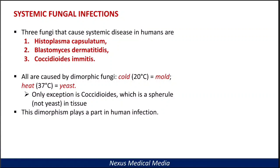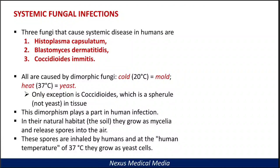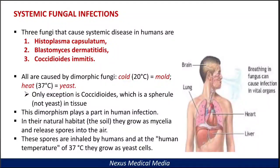This dimorphism plays a part in human infection. Their natural habitat is the soil, where they grow as mycelia and are released as spores into the air. These spores are inhaled by humans at the human temperature of 37 degrees Celsius and grow as yeasts. You can see different organs mainly affected by systemic fungal infections: the brain, lungs, heart, liver, etc.